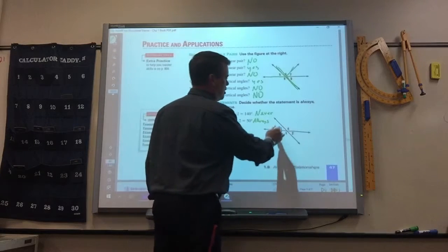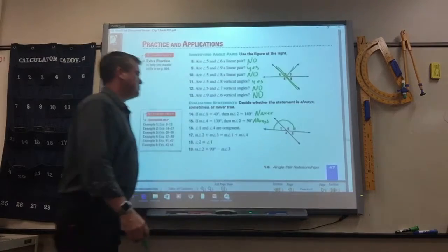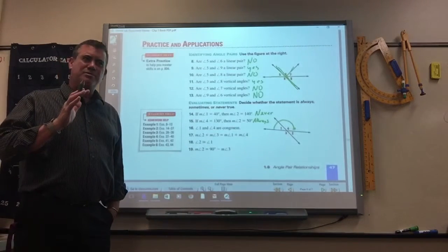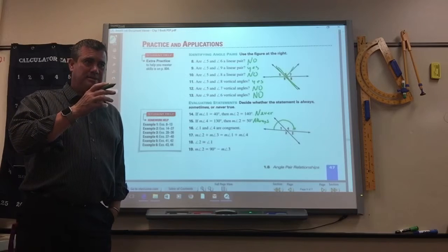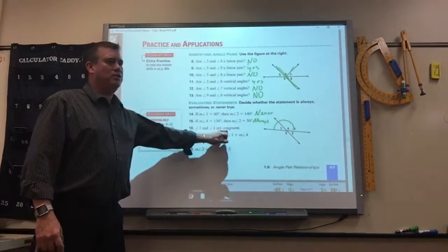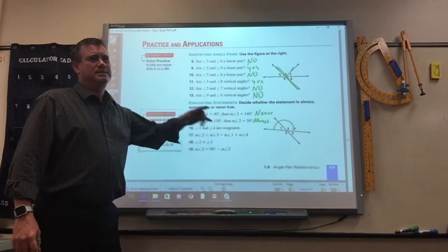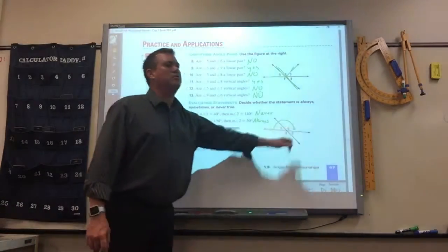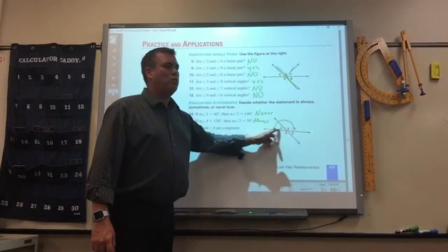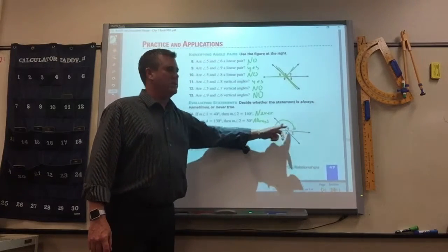Are 1 and 4 congruent? No. Sometimes. Sometimes. When would they be? When they'd be equal to 1. So what would they each have to be in order to be congruent? Complementary. No, supplementary. No, no. They do have to be supplementary. But if 1 and 4 were congruent, how many degrees would they each have to be?